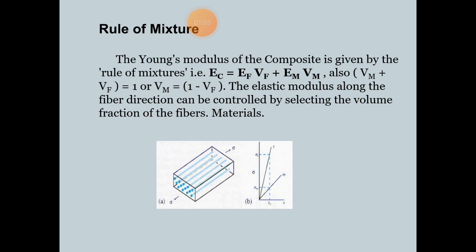First is the rules of the mixture. The Young's modulus of the composite is given by rules of the mixture. That is, EC equals EFVF plus EMVM. Also, VM plus VF equals 1 or VM is obviously 1 minus VF. That's why the elastic modulus along the fiber directions can be controlled by selecting the volume fractions of the fiber materials. See the figure.